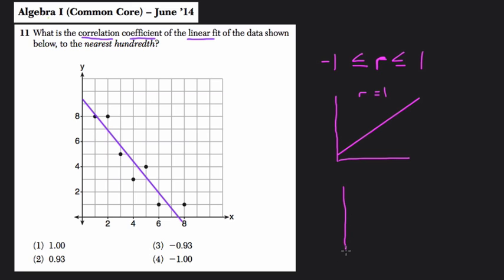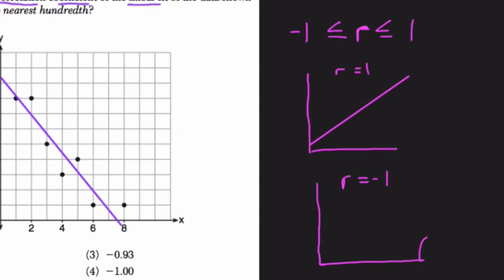Whereas if r was negative 1, that would mean we have a perfect line somewhere with a negative slope. Again, the slope might not be negative 1 per se. We don't really know what the slope is. But we do know that it has a negative slope. And it's a perfect fit. So the r value represents how fit it is.